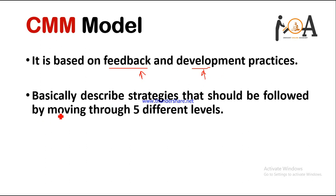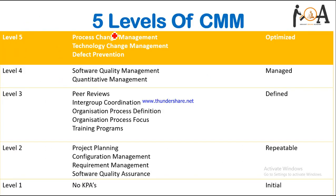CMM describes strategies that should be followed by moving through 5 different levels. There are basically 5 different levels in the Capability Maturity Model, and by describing several strategies at each level we can analyze over CMM. In CMM, these 5 levels have key process areas (KPAs). In each level there are several KPAs, and those KPAs have conditions to satisfy in order to match the maturity model of the software.